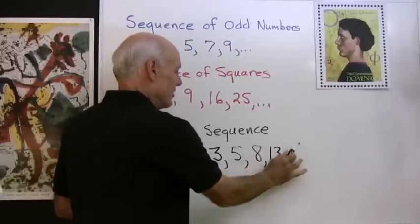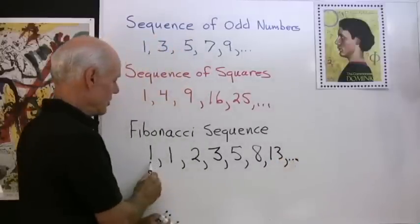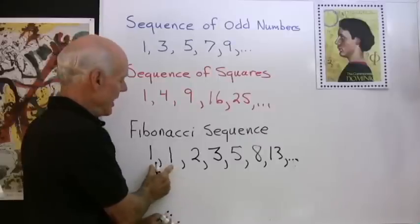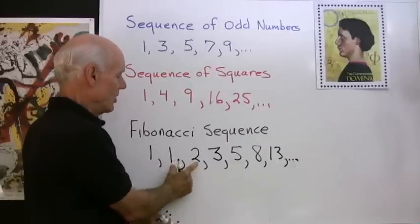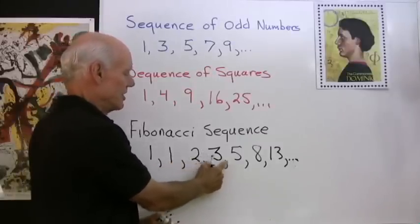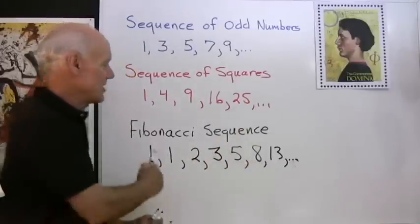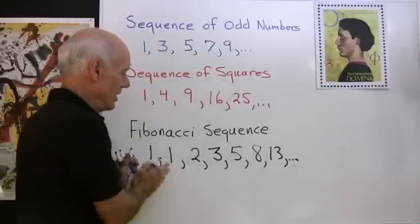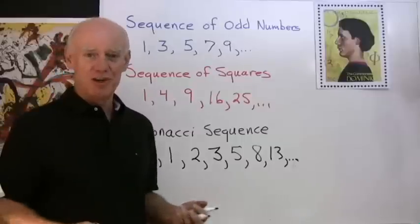So how do you get the consecutive members of the Fibonacci sequence? It always starts with two 1s, and then you add the previous two to get the next one. So 1 and 1 is 2, 1 and 2 is 3, 2 and 3 is 5, 3 and 5 is 8, and so on. That's the Fibonacci sequence, and the method of reasoning we use to get those numbers is called inductive reasoning.